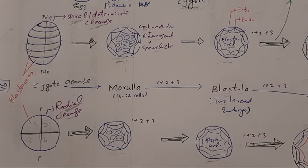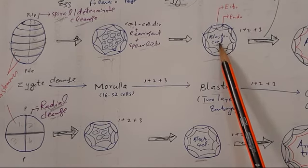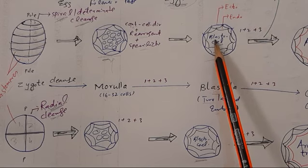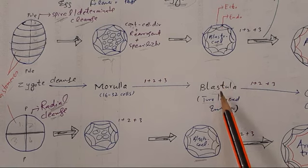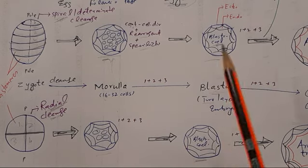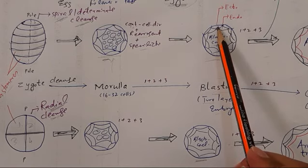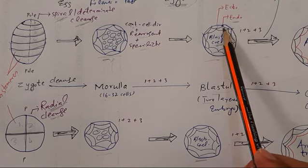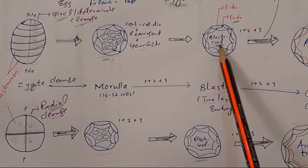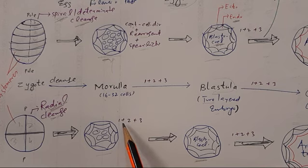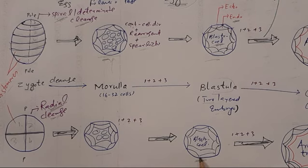The blastula has a cavity which is called blastocoel (B-L-A-S-T-O-C-O-E-L). The two-layered embryo has an outer layer called ectoderm and an inner layer called endoderm, and the cavity of the blastula is called blastocoel. Through continuous cell division, rearrangement, and specialization, the morula forms this hollow two-layered embryo called blastula.